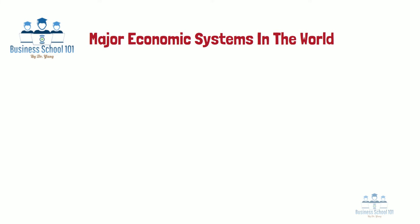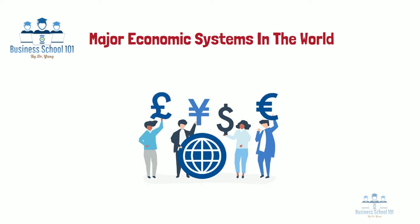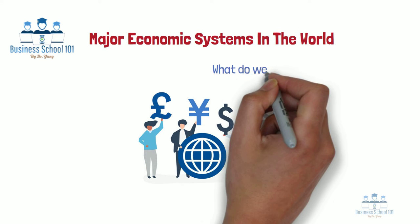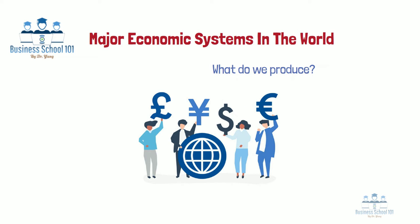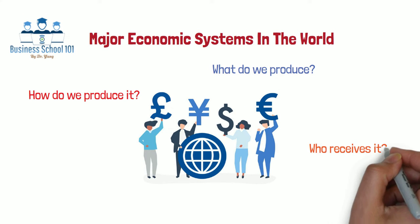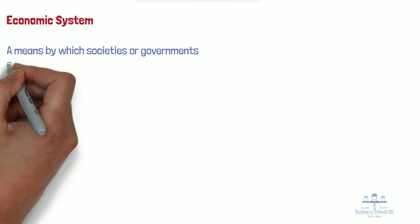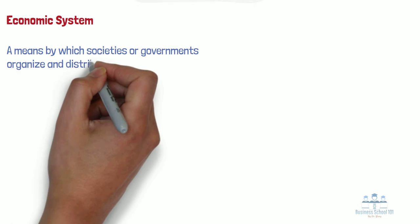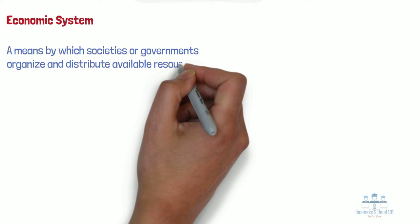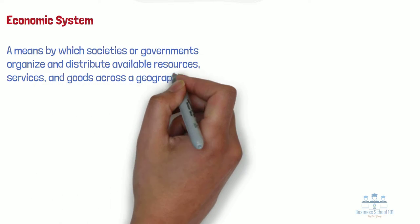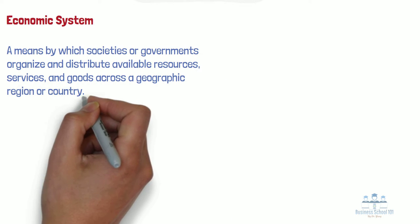Generally, a society's economic system answers three fundamental questions: What do we produce? How do we produce it? And who receives it? By definition, an economic system is a means by which societies or governments organize and distribute available resources, services, and goods across a geographic region or country.